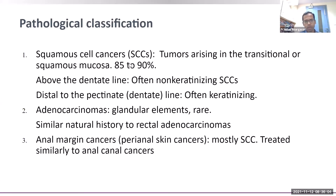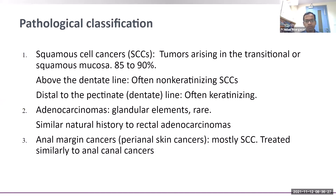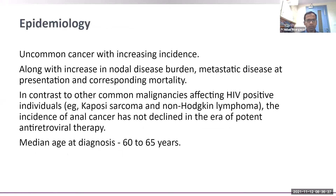The most common type is squamous cell carcinoma, comprising 85 to 90 percent of all anal cancers. Tumors arising in the transitional zone or squamous mucosa are mainly squamous cell carcinoma. Above the dentate line it is often non-keratinizing; below the dentate line up to the pectinate line it is often the keratinizing variant. Adenocarcinoma is rare and has a natural history similar to rectal adenocarcinoma.